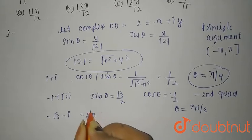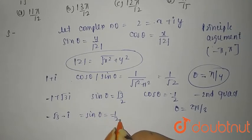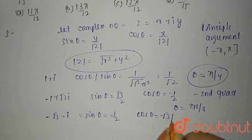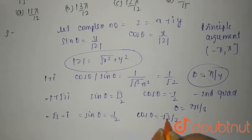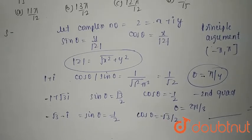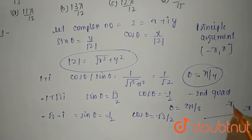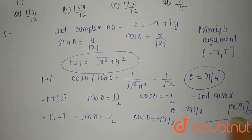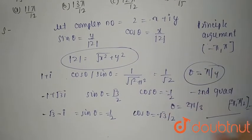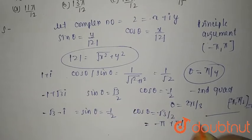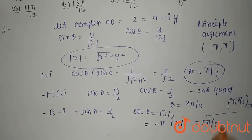For −√3 − i: sin θ = −1/2 and cos θ = −√3/2. It lies in the third quadrant because both are negative. The reference angle is π/6, so the principal argument, adjusted to lie between −π and π, is −5π/6.